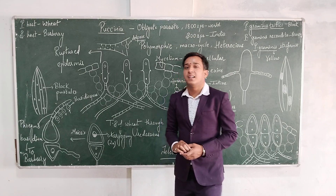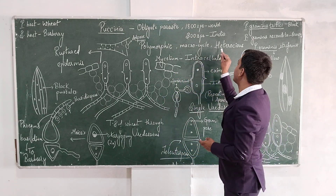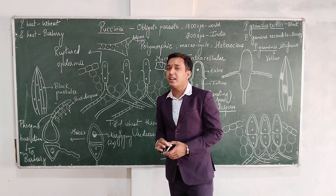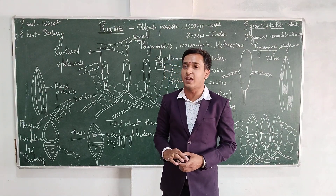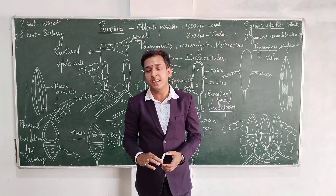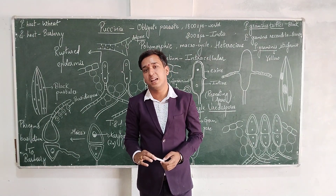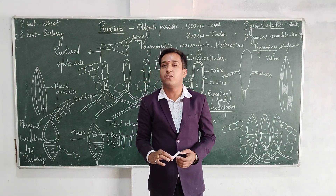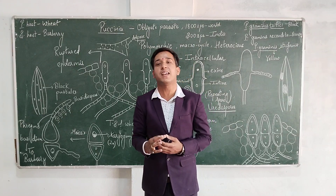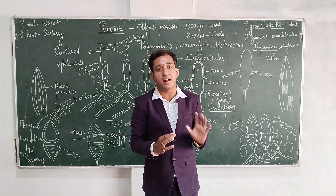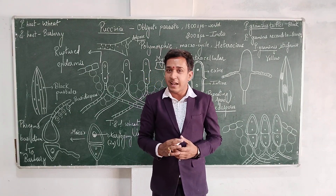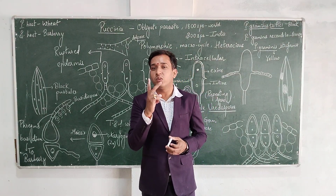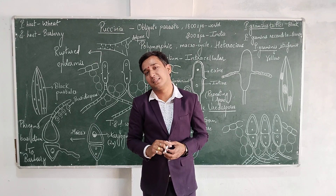Puccinia is a heteroecious fungus. We classify Puccinia into two types: one is autoecious and second is heteroecious. Autoecious means that a fungus completes its life cycle in only one plant, and heteroecious means that it completes its life cycle in two plants.